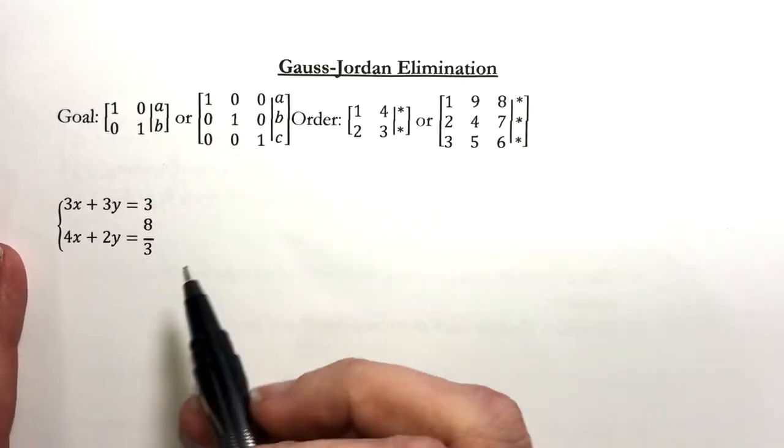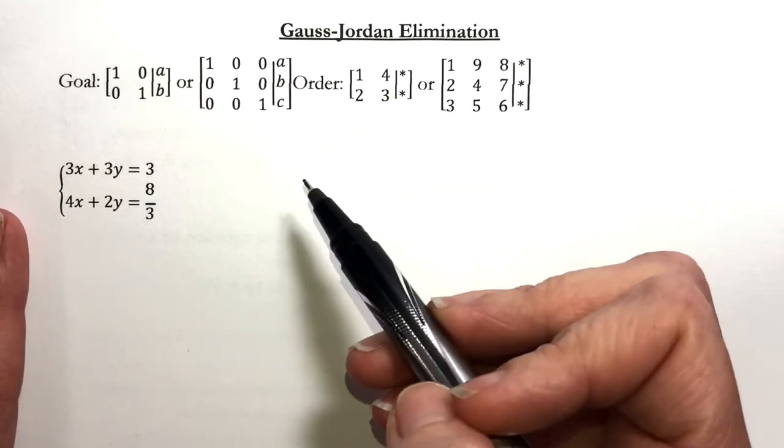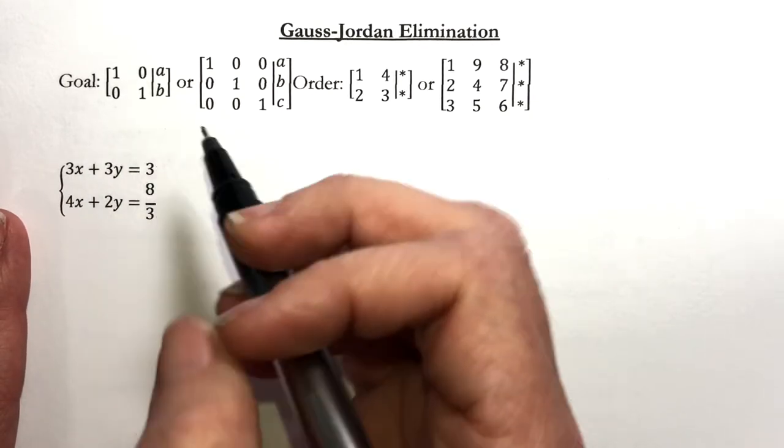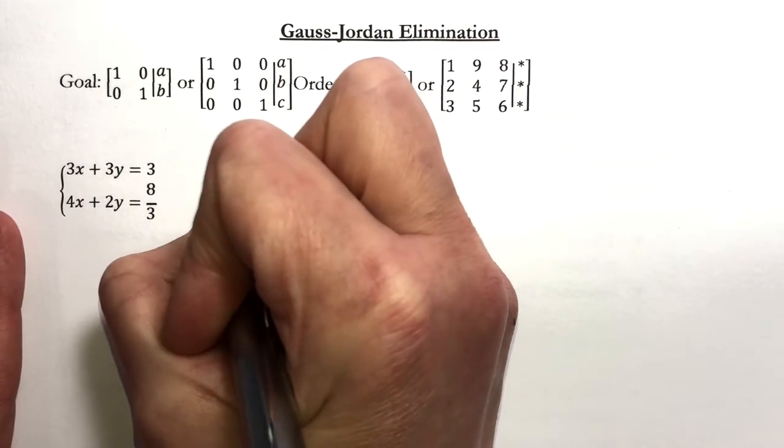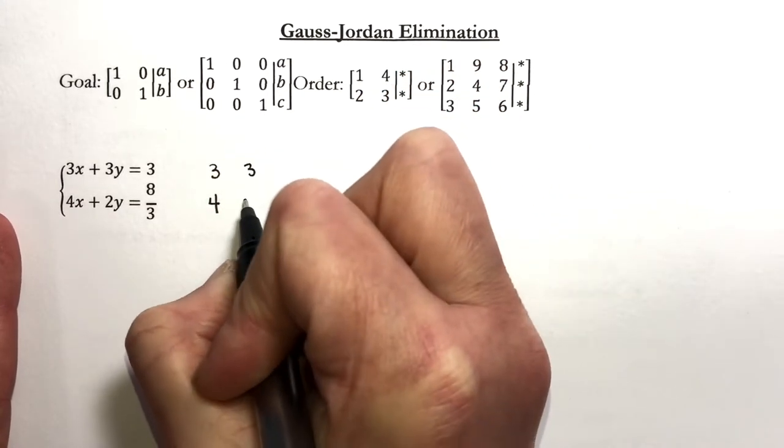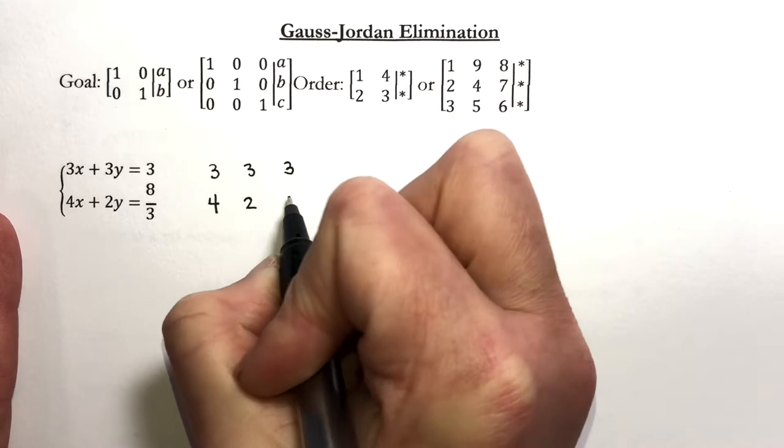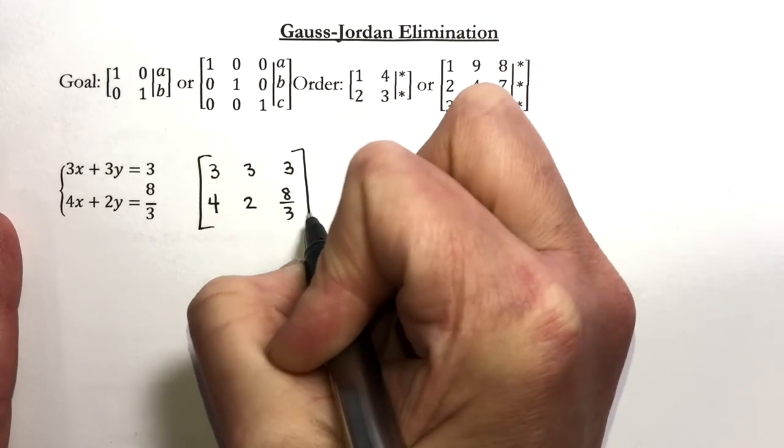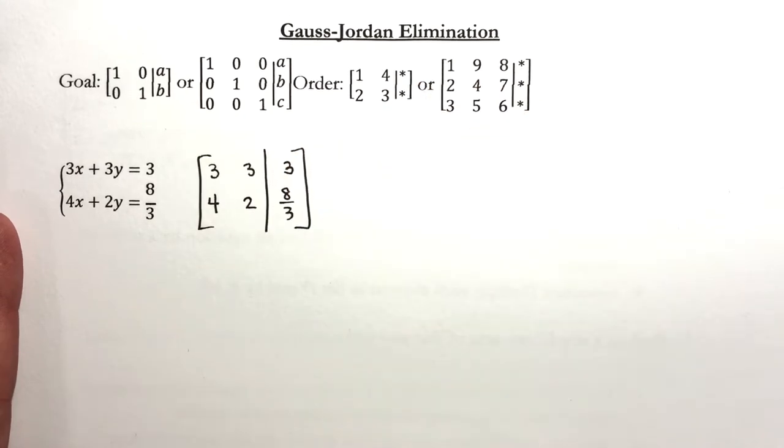I want to solve this system using Gauss-Jordan elimination. I'm going to start off by writing my augmented matrix: 3 and a 4, 3 and a 2, 3 and 8 thirds.